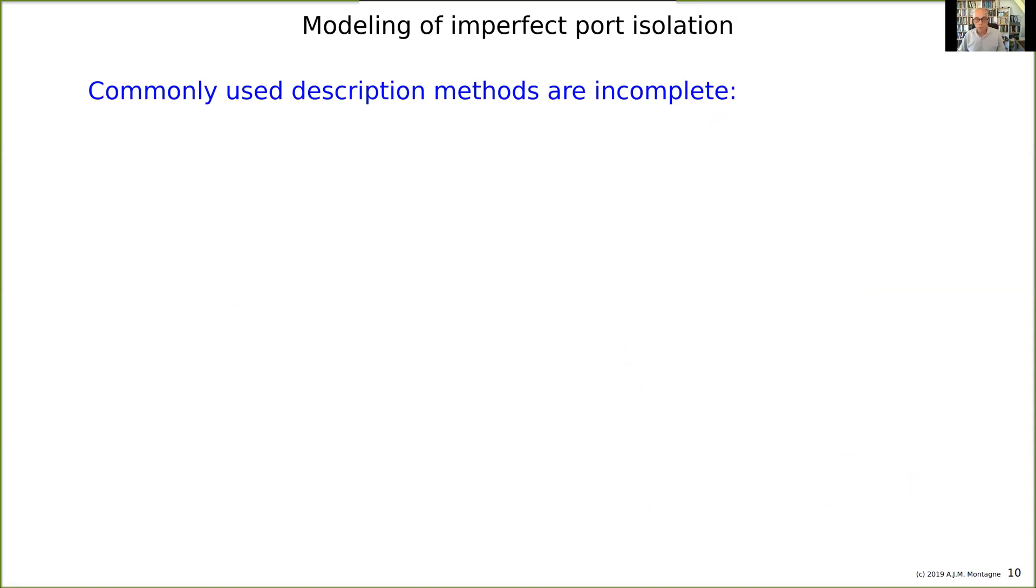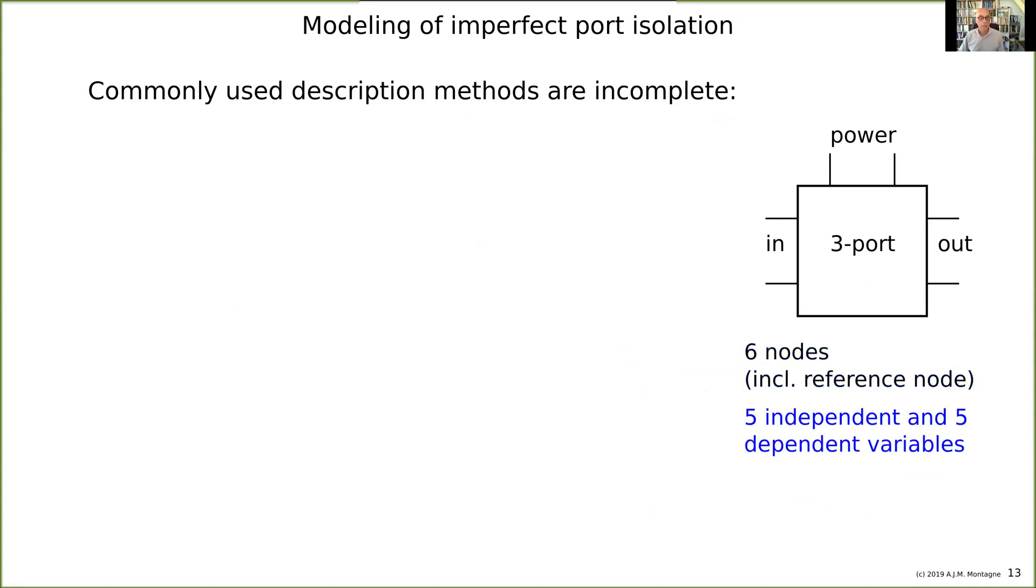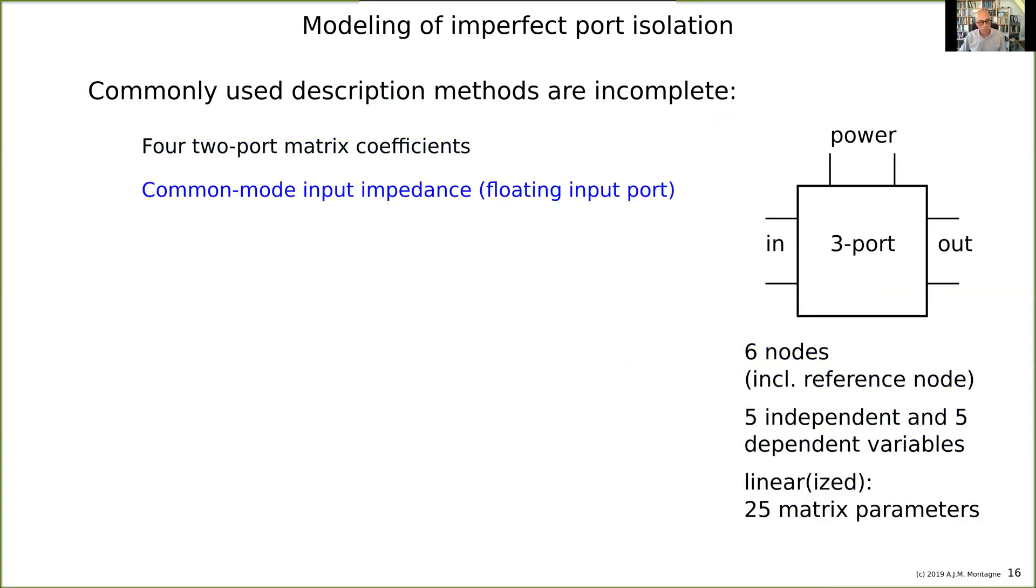Now this method is incomplete. We have already six nodes, so we need many more - we need five by five equations which is 25 parameters. We have four two port parameters that we really need, and we have common mode input impedance that's something we usually define.